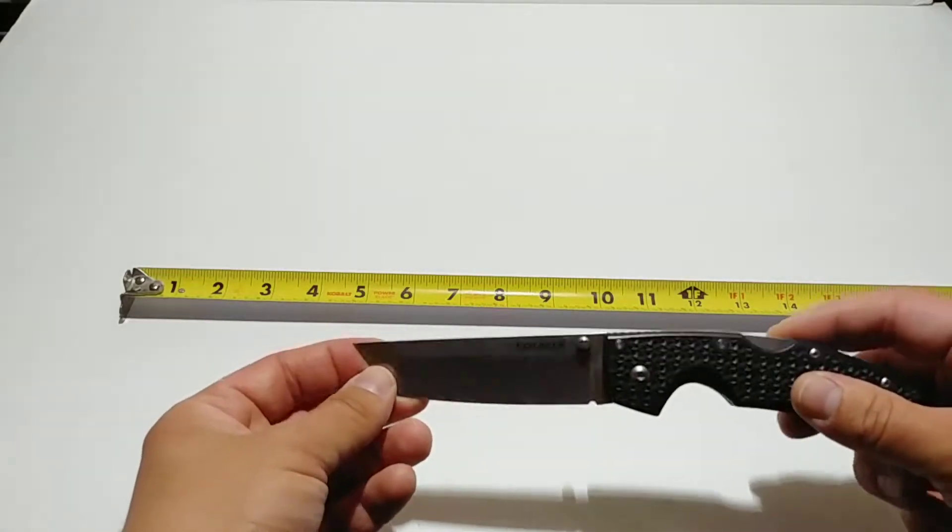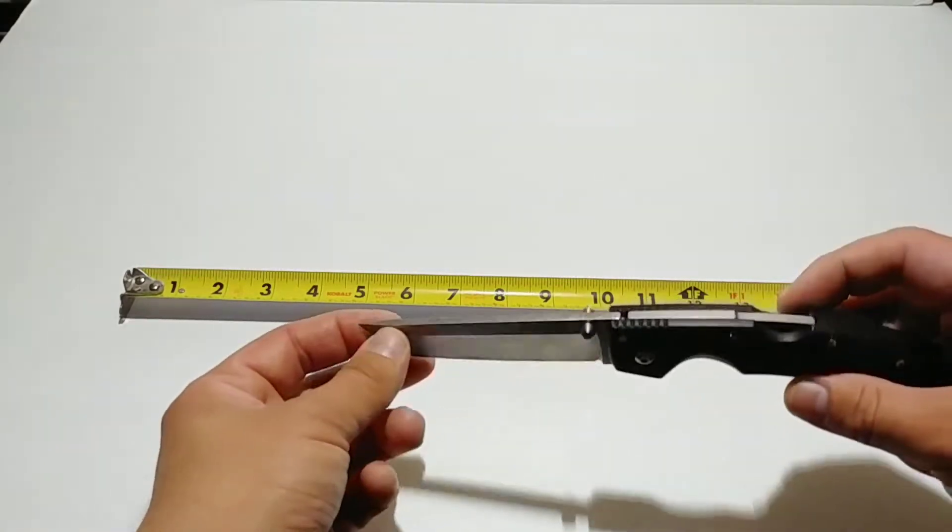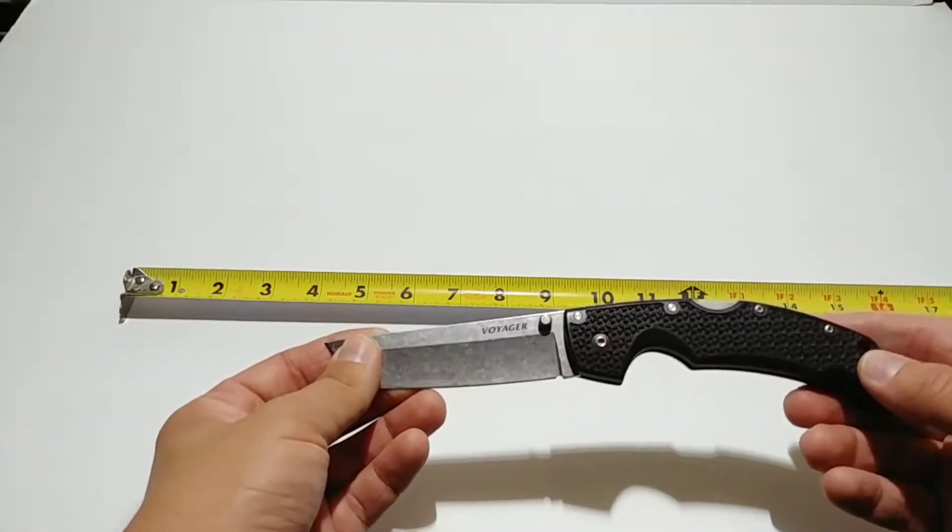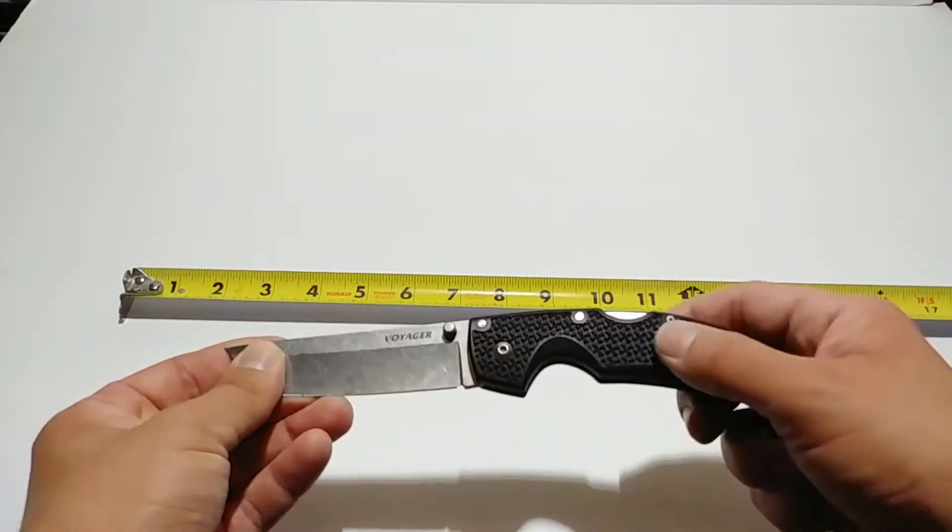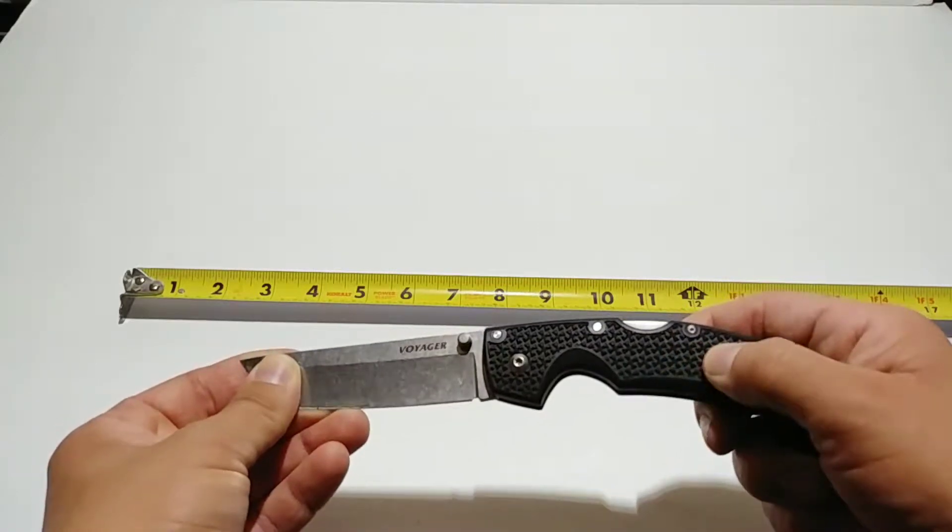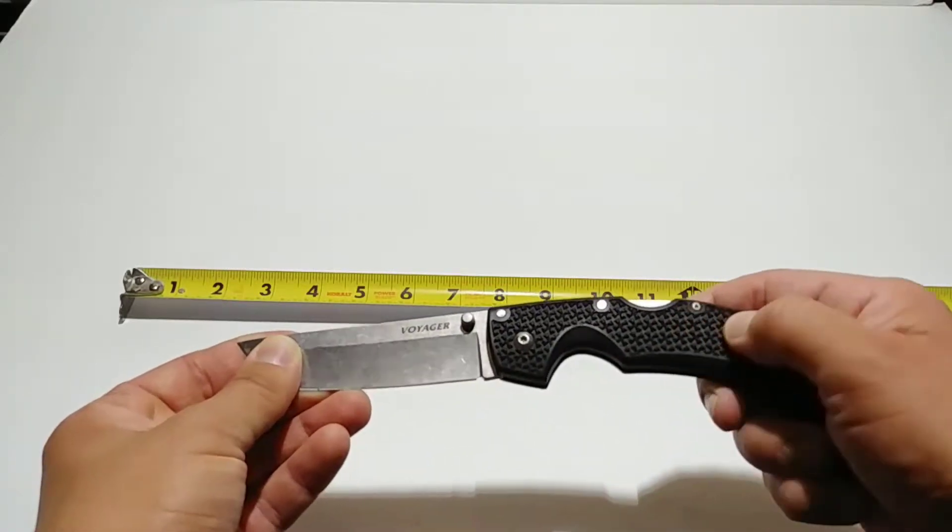Most of you probably do something similar. The handle is five and a quarter inches long, made of Griv-Ex. If you're not familiar with that, it's a hard plastic. It's not rubberized, but you will not miss the grippiness of rubber.